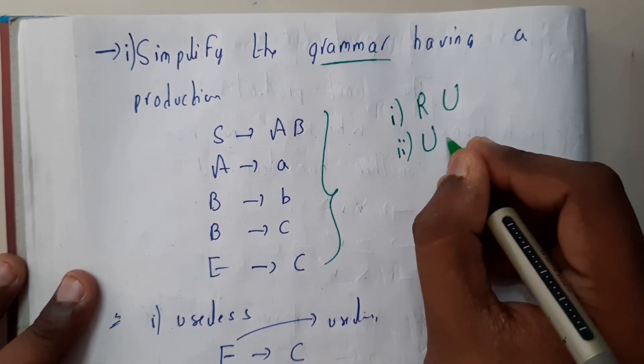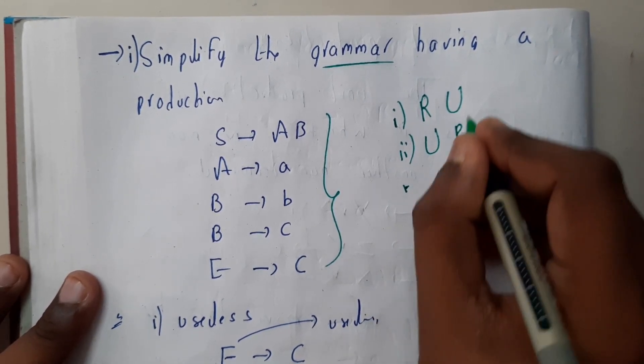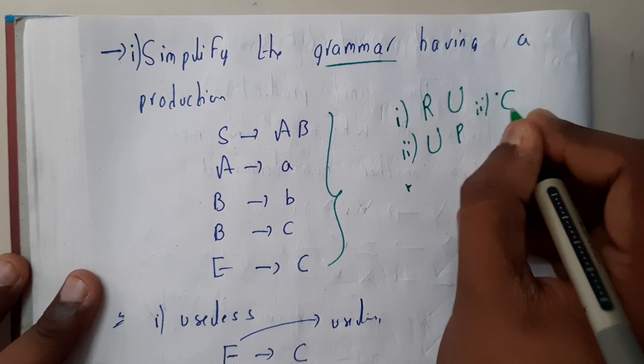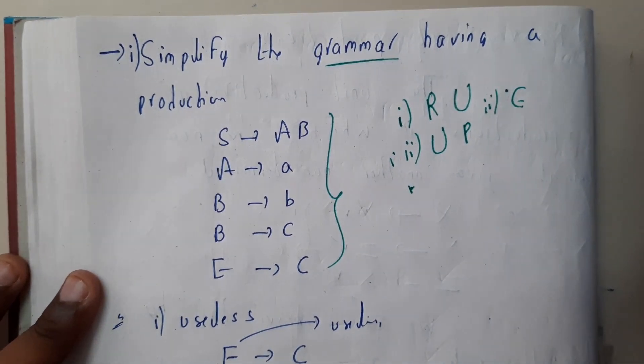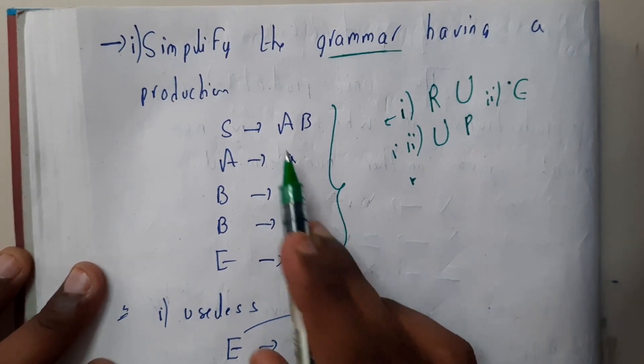The first step is removing useless symbols. The second step is removing epsilon, and the third step is checking for unit productions. So in this, first let us check removing useless symbols. Here we are having S tends to AB.